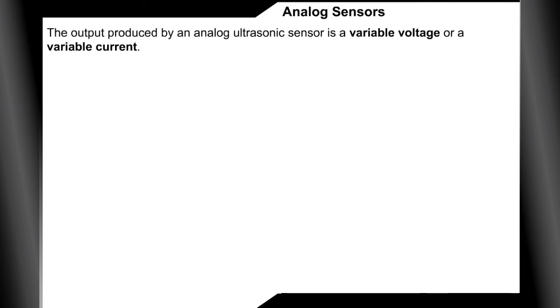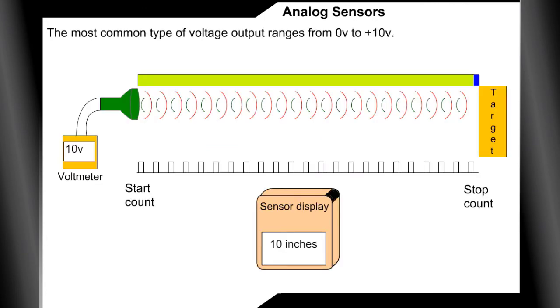The output produced by an analog ultrasonic sensor is a variable voltage or a variable current. The most common type of voltage output ranges from 0 volts to positive 10 volts. You can see the ranges below.